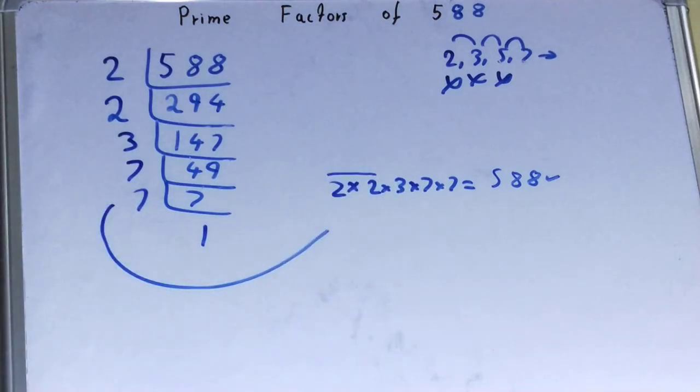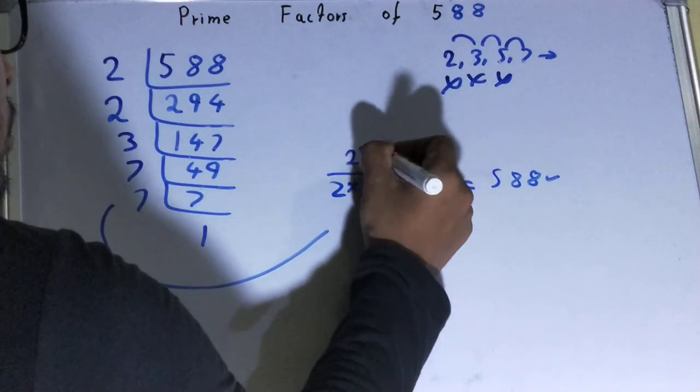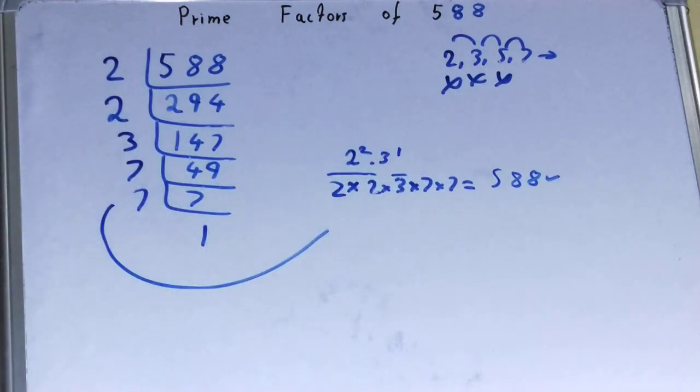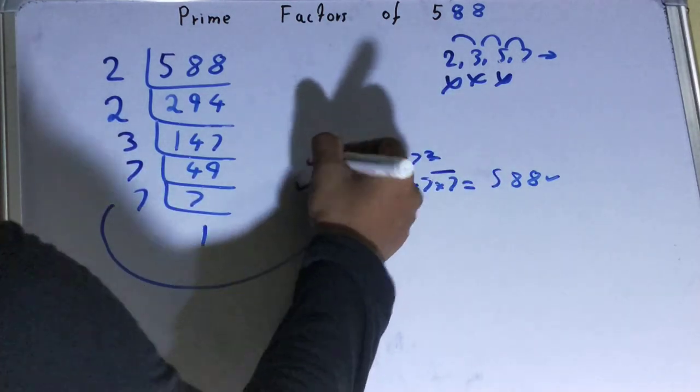You can also rewrite it in a different way. You have 2 times 2, so you can write it as 2 raised to power 2. You have 1 times 3, so you can write it as 3 raised to power 1. You have 2 times 7, so you can write it as 7 raised to power 2. So you can write it this way or this way. It's up to you.